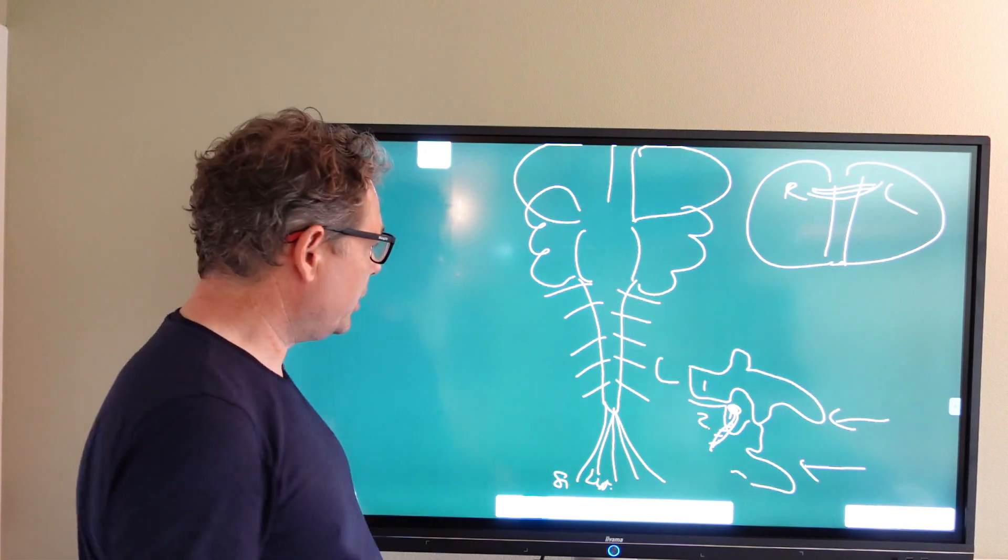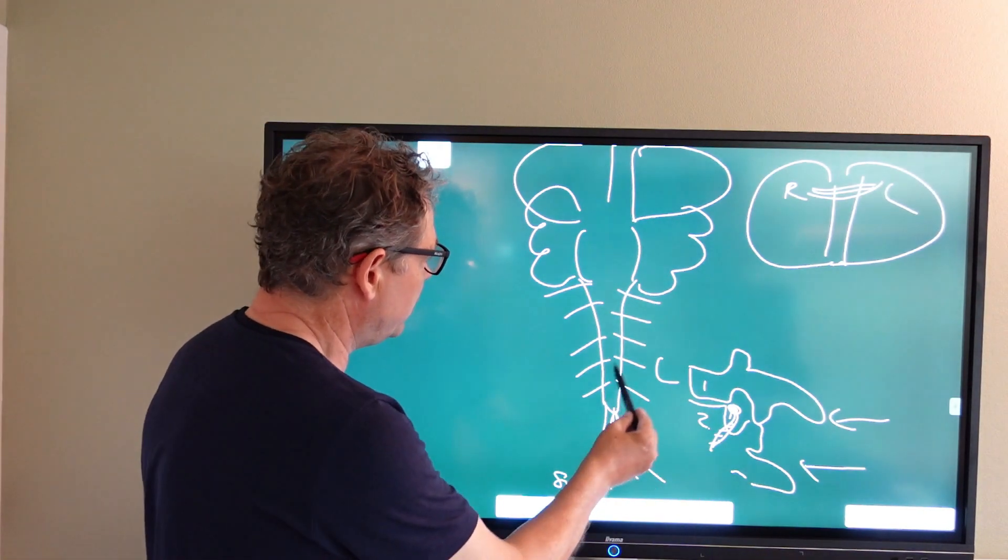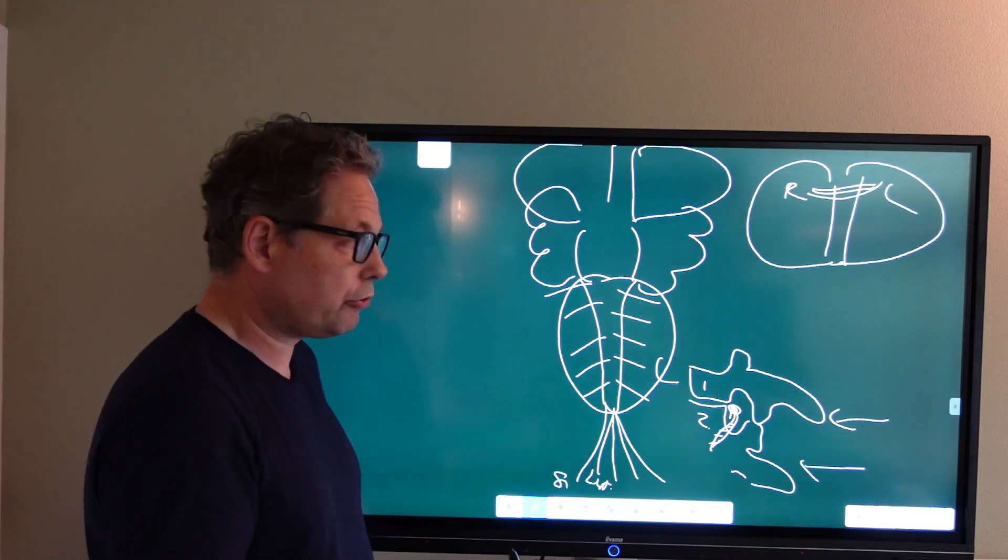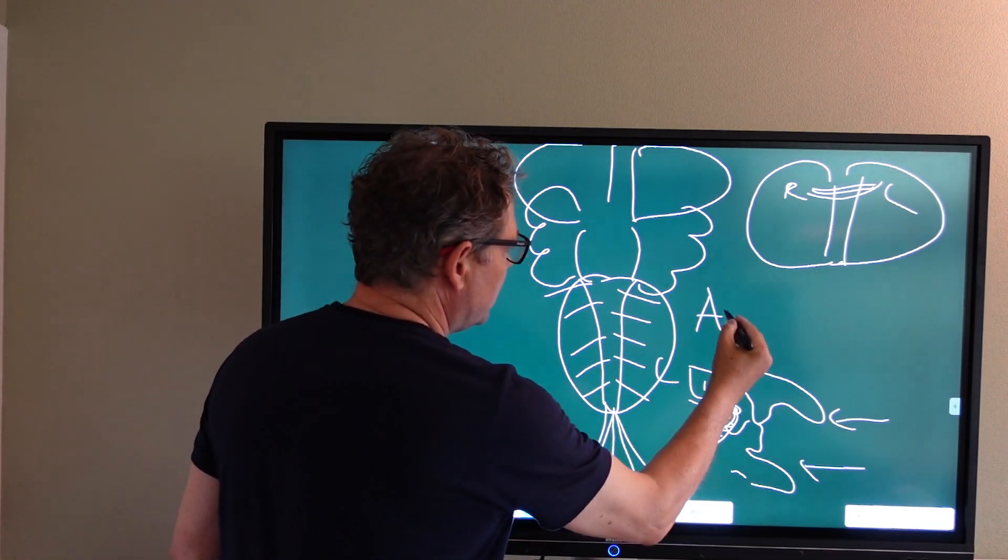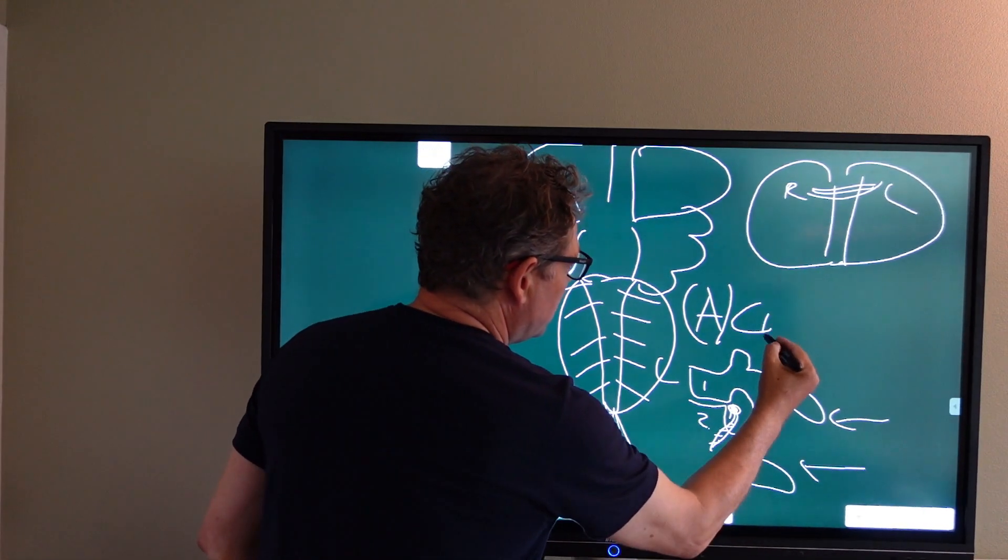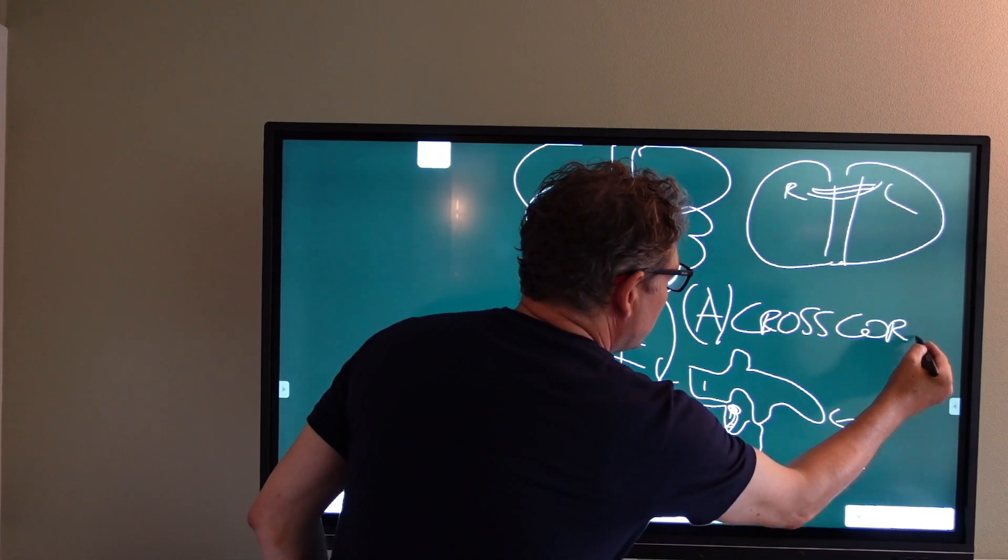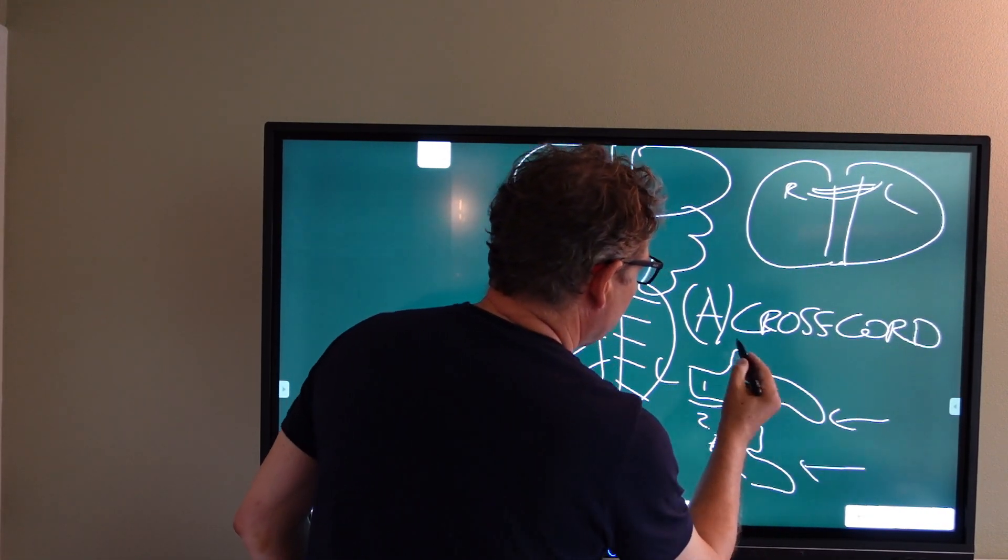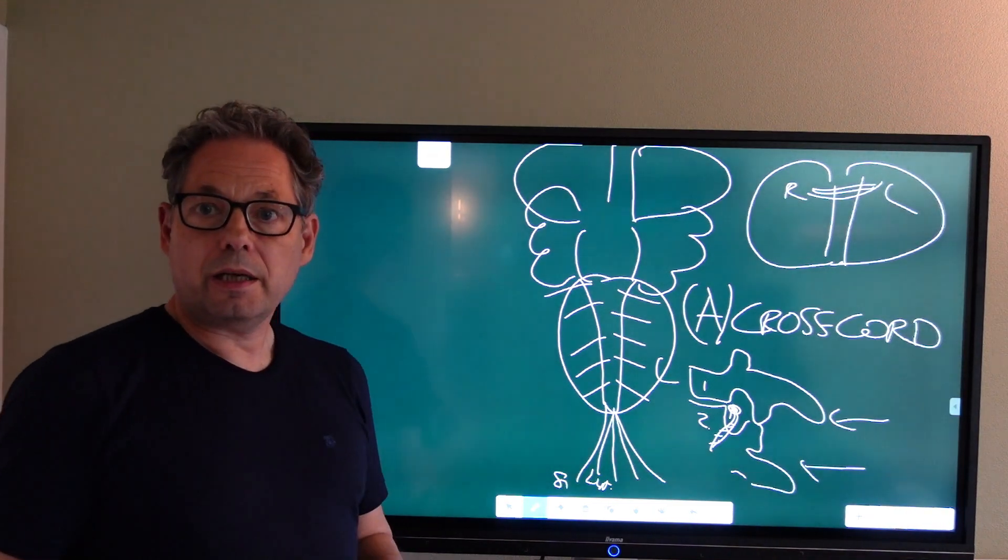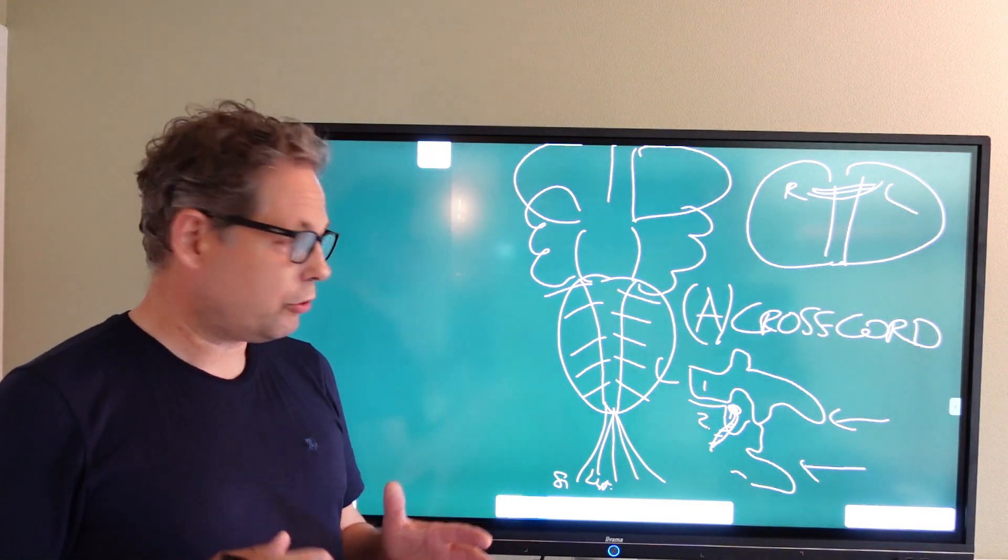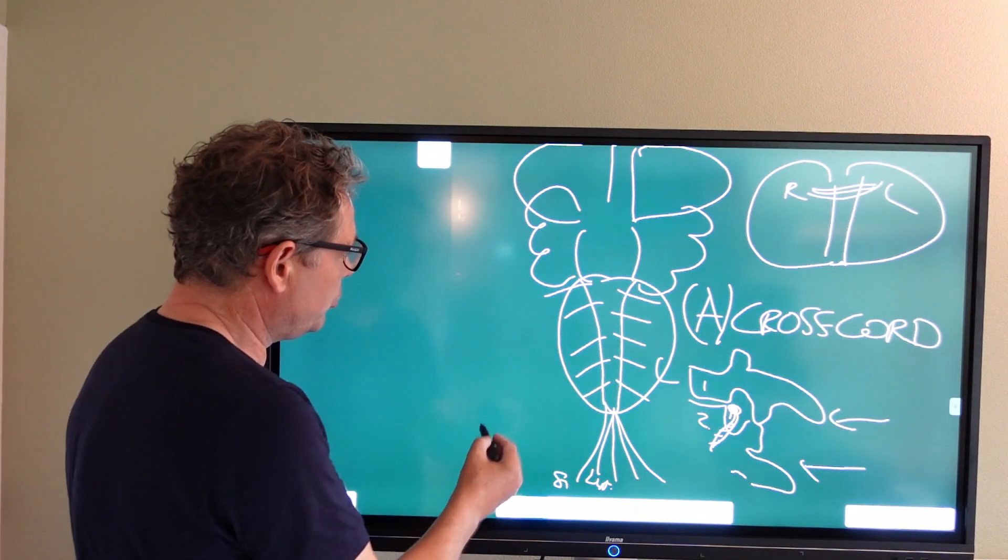So cross-cord reflexes, what are they? Well, mainly they are reflexes across the cord. So across the cord, they are intraspinal reflexes. So they occur in the spinal cord.